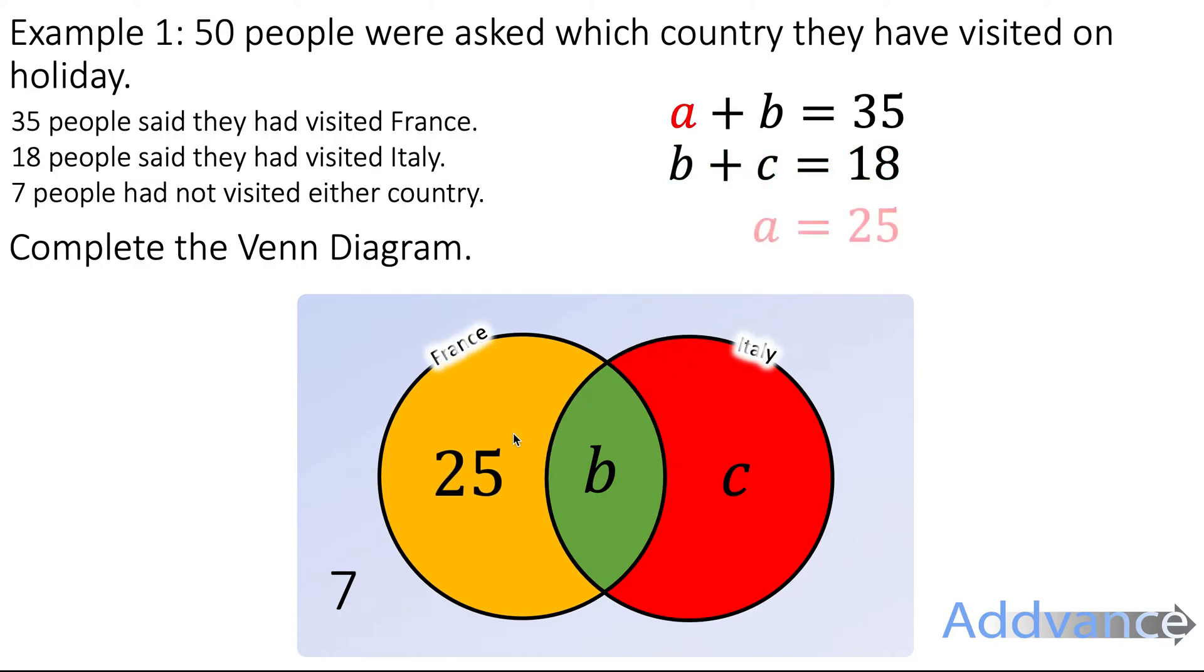So we can replace 25 on the Venn diagram with A. And now since we know that A is 25 we can work out B. A plus B is 35. Replace the 25 with A. 25 plus B is 35. I think you can see where this is going. B must be 10. So we can replace the B with 10. Now you should be able to see what C is. What do you think C is? So B plus C is 18. So 10 plus C is 18. C must be 8.